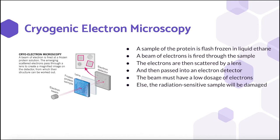The beam of electrons has to be low dosage because higher doses could damage the biological sample, which is sensitive to radiation. As such, the 2D images are often noisy.